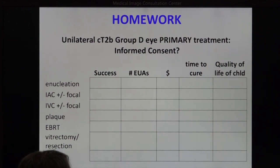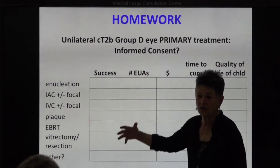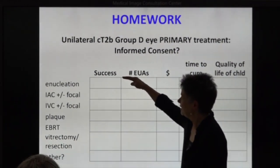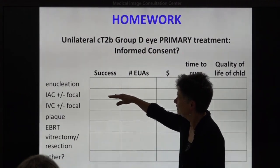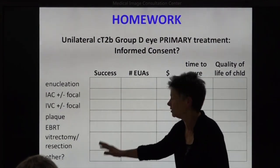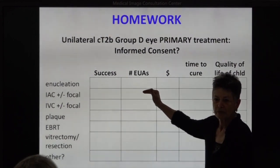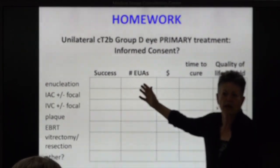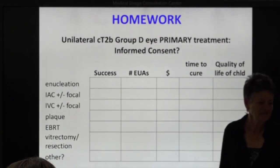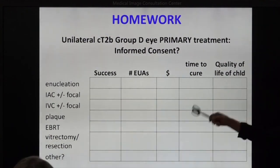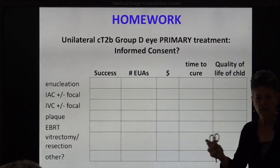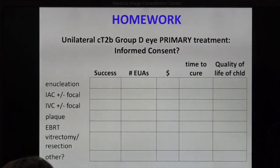It seems this isn't very clear, so what I'd like you to do is decide — and you can do this in little groups over dinner — what would the chance of success be for enucleation? And for EUAs, what's the number of them? I'd like you to fill every box, because every box should have a value or a sign on it.